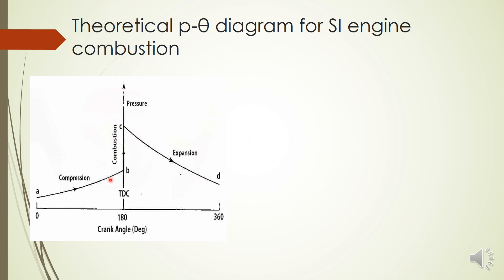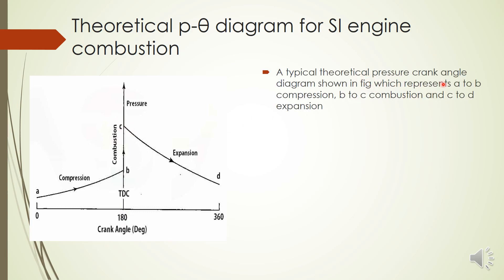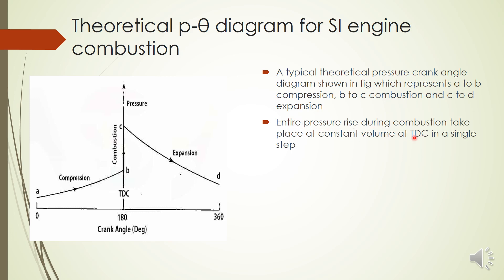In the theoretical p–θ diagram, the entire combustion completes in one step from B to C at constant volume — when the piston is at TDC the combustion is completed. A to B is compression, B to C is combustion, and C to D is expansion. The entire pressure rise during combustion takes place at constant volume at TDC in a single step.